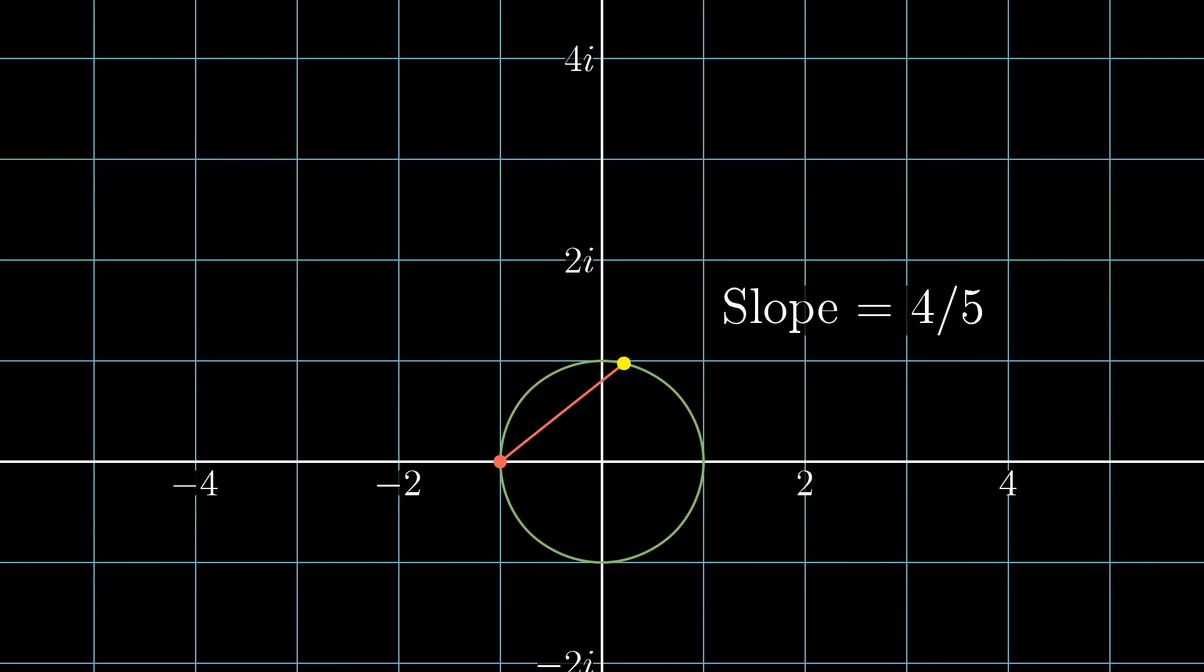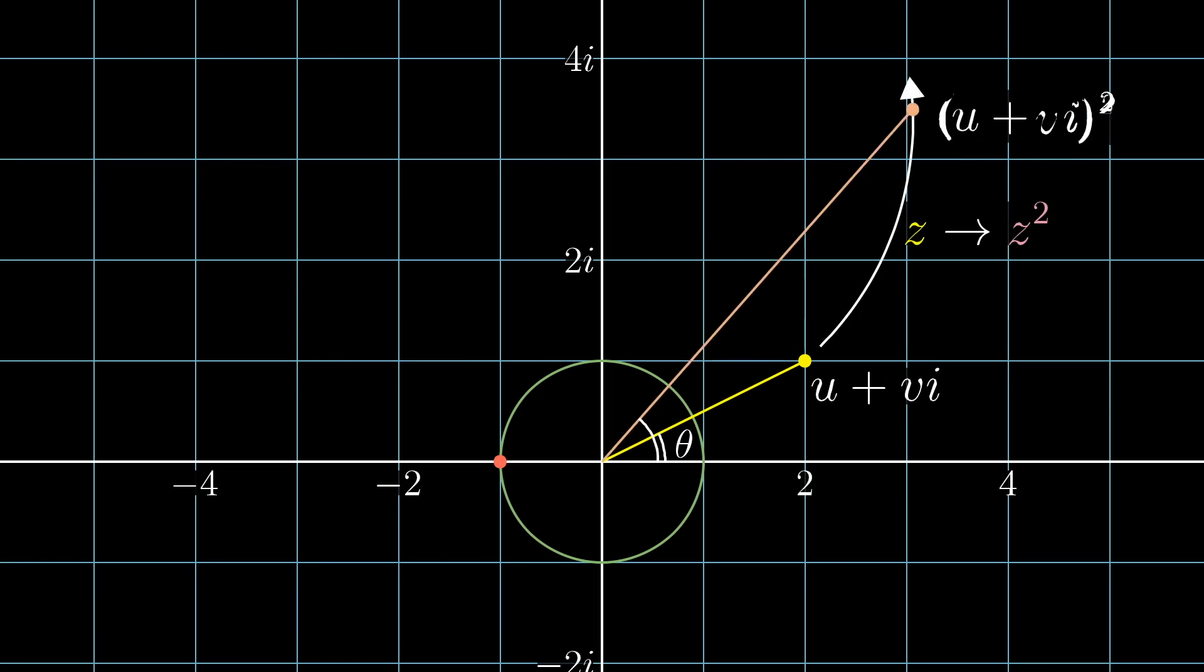Well, let's think through our method. We start off with some point u plus vi that has integer coordinates, and this number makes some angle off of the horizontal, which I'm going to call theta. Squaring this number, the resulting angle off the horizontal is two times theta. And of course when you project that onto the unit circle, it's along the same radial line, so the corresponding rational point of the unit circle also has that same angle, two times theta.